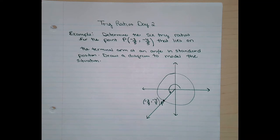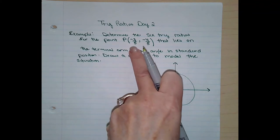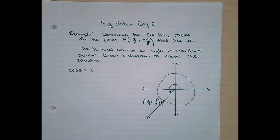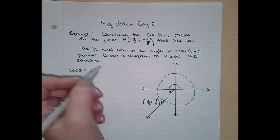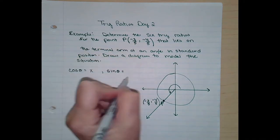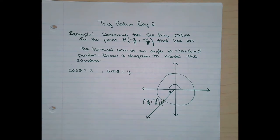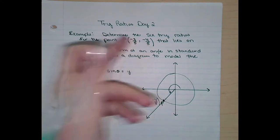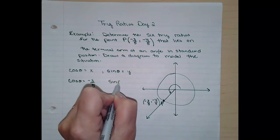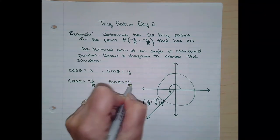There are a couple of ways to do this, so we'll try a few and you pick the one you like. We know that the cosine ratio of an angle is the X coordinate of the point on the unit circle, and the sine ratio of the angle is the Y coordinate of the point on the unit circle. So the cosine ratio is negative three-fifths and the sine ratio is negative four-fifths. That's easy enough.